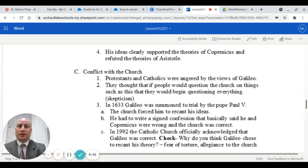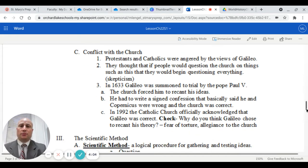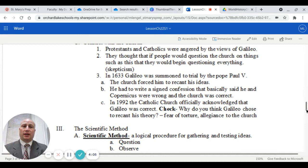One thing that happens with Galileo is he gets himself into quite a conflict with the church. Protestants and Catholics were angered by the views of Galileo. They thought that if people could question the church on things such as this, then they would begin to question everything. This is something we learned about in a previous section called skepticism. In 1633, Galileo was officially summoned to trial by Pope Paul V. The church forces him to recant his ideas. He had to write a signed confession that said he and Copernicus were wrong and the church was correct. It wasn't until 1992 that the Catholic Church officially acknowledges that Galileo was correct.